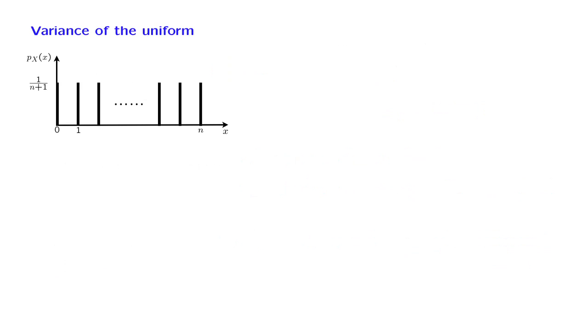Let us now calculate the variance of a uniform random variable. Let us start with a simple case where the range starts at 0 and extends up to some n. So there is a total of n plus 1 possible values, each having the same probability, 1 over (n plus 1). We calculate the variance using the alternative formula. Let us start with the first term.